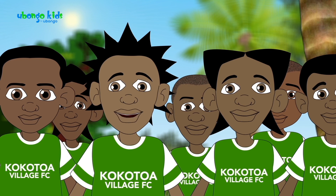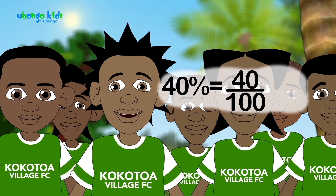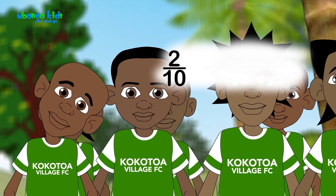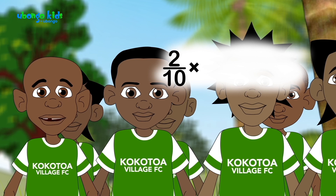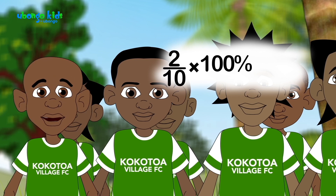You see? That 40% just means 40 out of 100, which is the same thing as 4 out of 10. I understand. So, Amani got 2 votes out of 10. If I multiply that by 100%, 2 over 10, we get 20%.